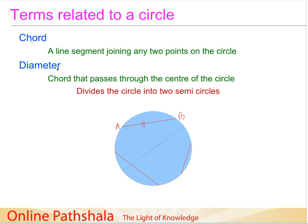Now, what happens if the chord of the circle passes through the center? It has a special name — it is called a diameter. A diameter is a chord that passes through the center of the circle. In this case, the chord passes through the center from one side to the other. If you fold along this diameter, the circle is divided exactly into two parts — two half circles, each called a semicircle.